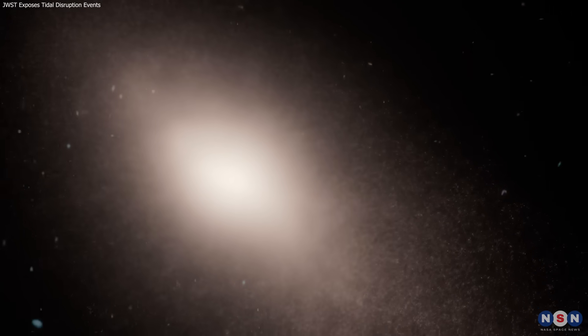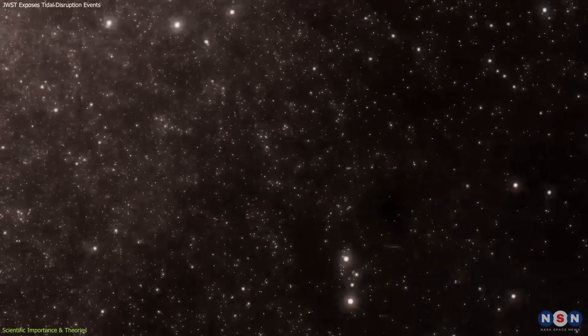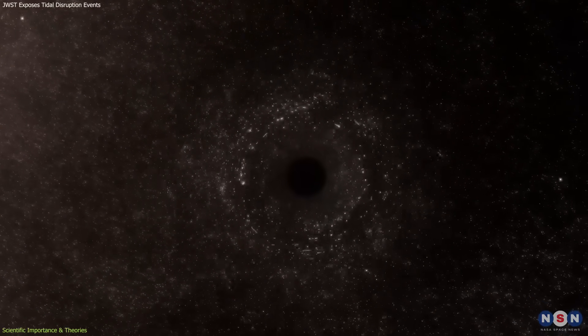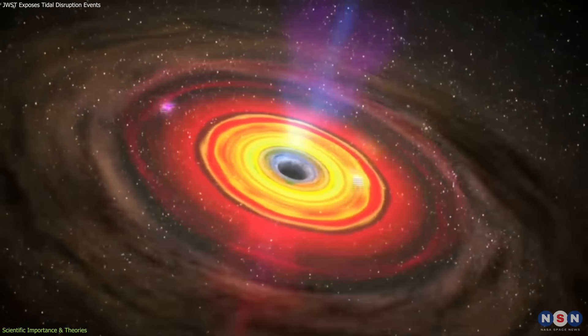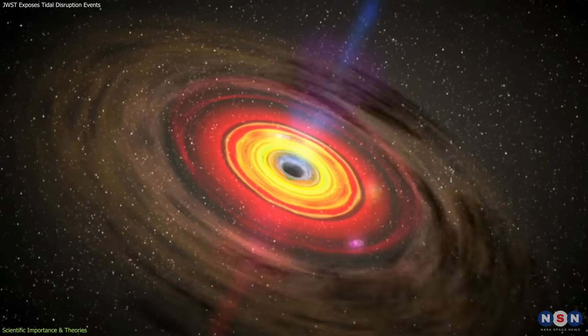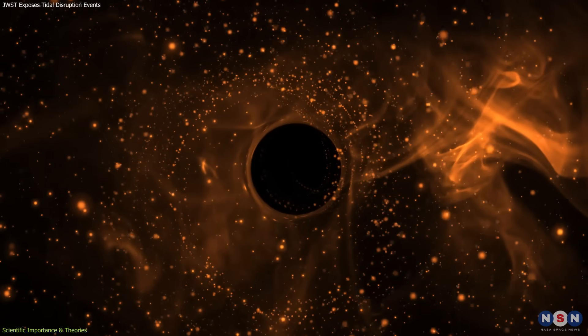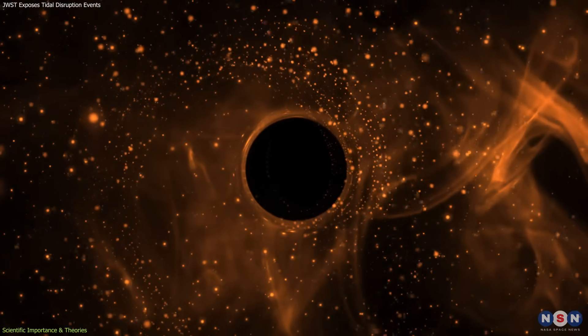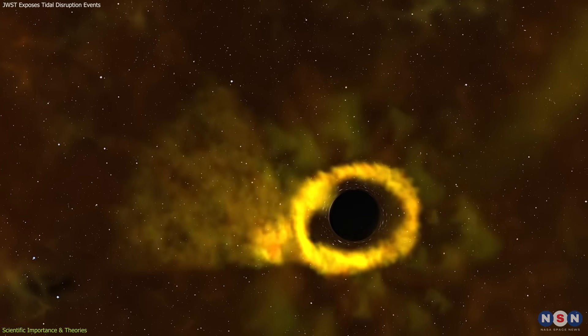The ability to observe tidal disruption events in dusty galaxies matters because it finally gives scientists access to dormant black holes. Active black holes surrounded by bright dust structures are easy to find because their activity is continuous. Dormant black holes, by contrast, stay quiet until a star happens to wander into range, making them far harder to detect.